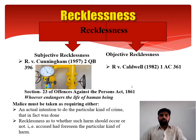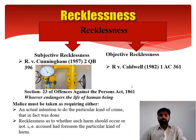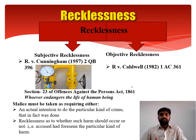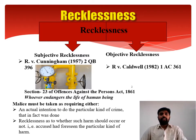As studied in our previous lecture, for intention three things have to be proved: number one, foresightness of consequence; number two, following the course of conduct; and number three, desire of consequence. If these three things exist, we can say the accused is having an intention to commit an offense.